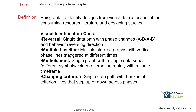Being able to identify designs from visual data is essential for consuming research literature and designing studies. Visual identification cues: for reversal, look for a single data path with phase changes and behavior reversing direction. For multiple baseline, you'll see multiple stacked graphs with vertical phase lines at different times — typically easy to identify. For multi-element, you have a single graph with multiple data series. And for changing criterion, look for a single data path with horizontal criterion lines that step up or down across phases.